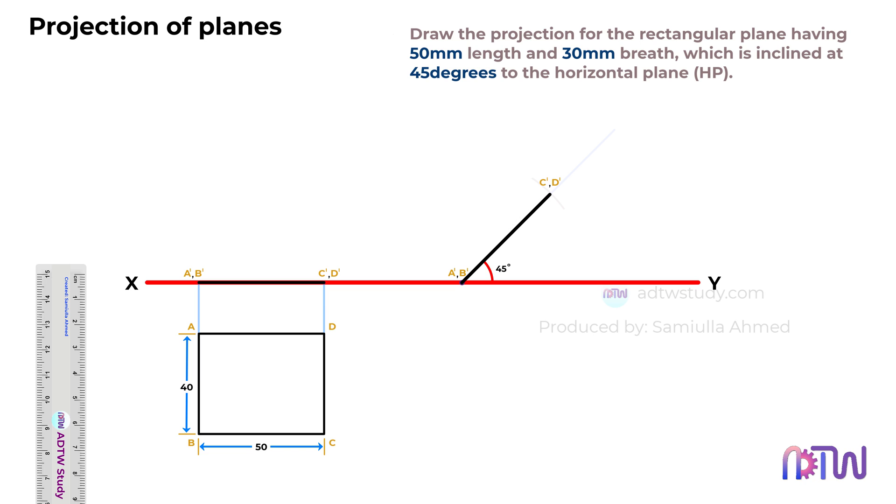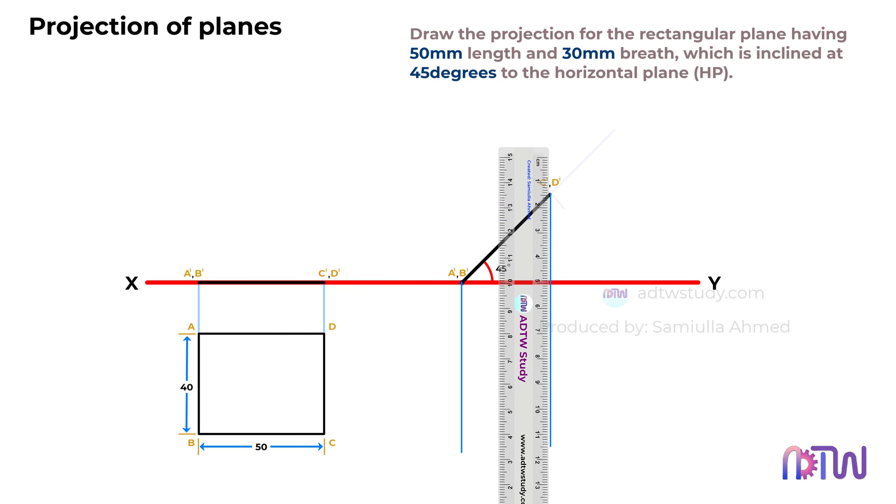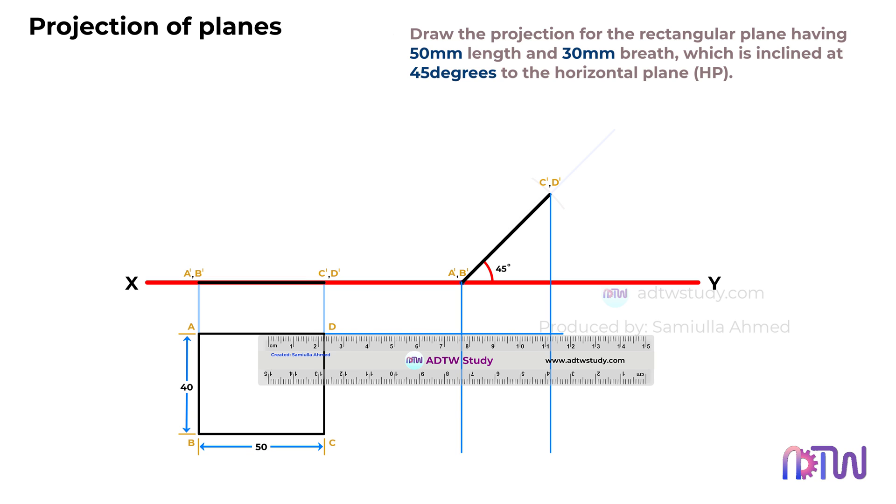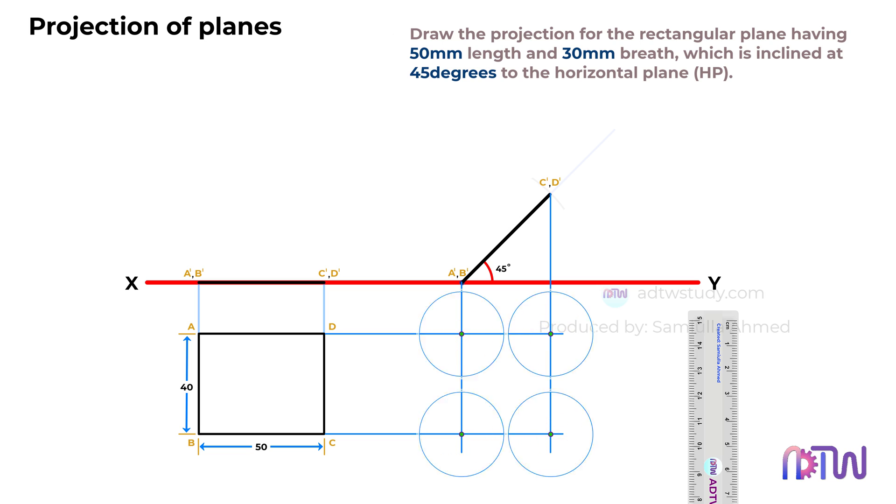Once you've inclined the front view of the rectangle at 45 degrees, the next step is to project vertical lines from the endpoints of this view. Simultaneously, project horizontal lines from the true shape of the rectangle. The intersection points of these lines will give us the top view of the inclined rectangle. Label these intersections as A, B, C, D.